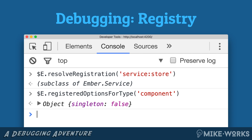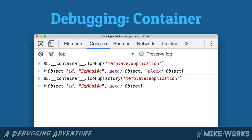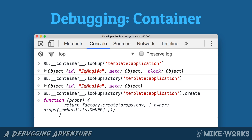In terms of debugging the container, the easiest place to do this is double underscore off of the application instance and then .lookup. You can also use the GetOwner API. I want to show you the difference between looking up an instance and looking up a factory, because we have a lookup and lookup factory. For something like templates, it is less easy to see compared to what we saw earlier with services — it's less easy to discern between the instance and the factory.